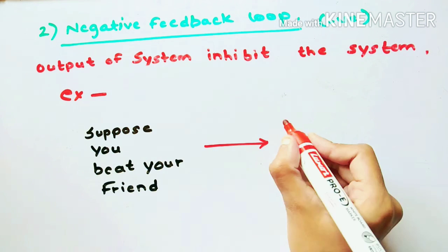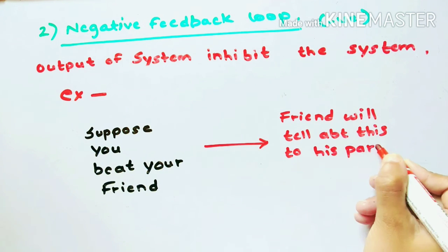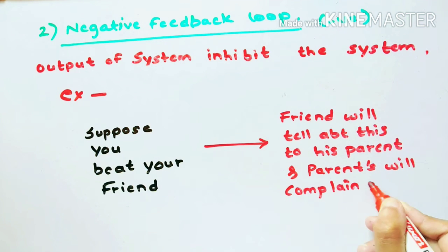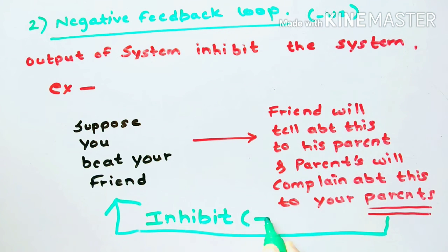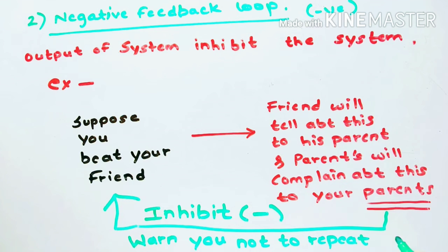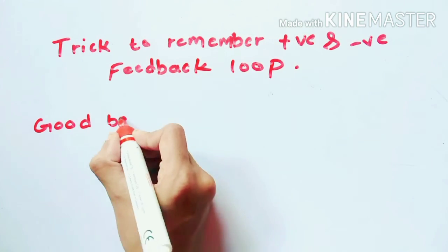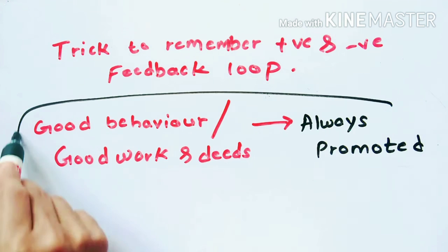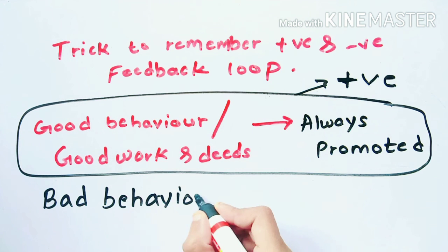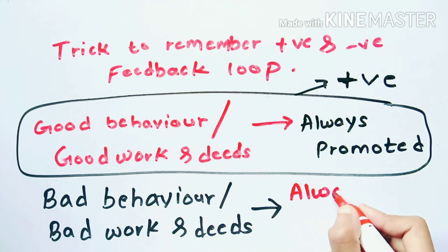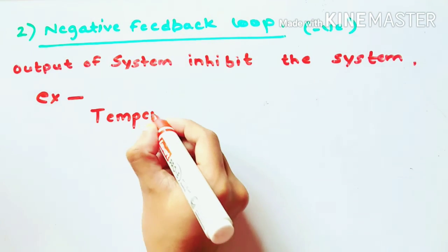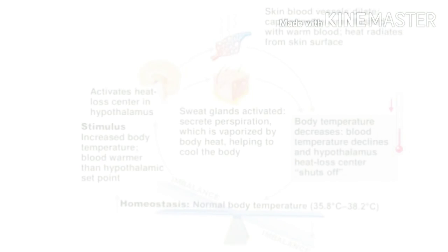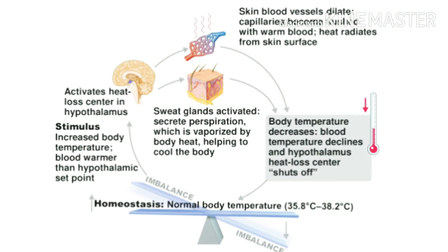Let's understand negative feedback loop with a day-to-day example. Suppose you and your friend had a physical fight and your parents get a complaint about it — your parents will warn you not to do so, meaning they are inhibiting or slowing you down from repeating the same behavior. Your bad deeds are always slowed down — your parents scold you when you do wrong — that is an example of negative feedback. Your good deeds are always encouraged by your parents — that is positive feedback.